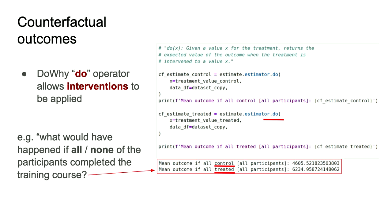DoWhy provides something called the DO operator, which is a way to access an intervention or apply a counterfactual scenario. To illustrate that, I've added a couple of extra outcomes. First, the outcome over all participants if none of them received any training — the average outcome goes down from $5,300 to $4,600. So if we take away the training, all the participants become more like the controls. We also have a counterfactual outcome as if we did provide training to all the participants — that increases the average wage to $6,200. Those numbers make sense because it makes the population look more like the ones who received training, or we can make the population look more like the ones who didn't. That's one of the key powers of this approach: it enables you to answer questions like 'what if we rolled out that program more widely?' or 'what if we replaced all these old devices with a new device?'